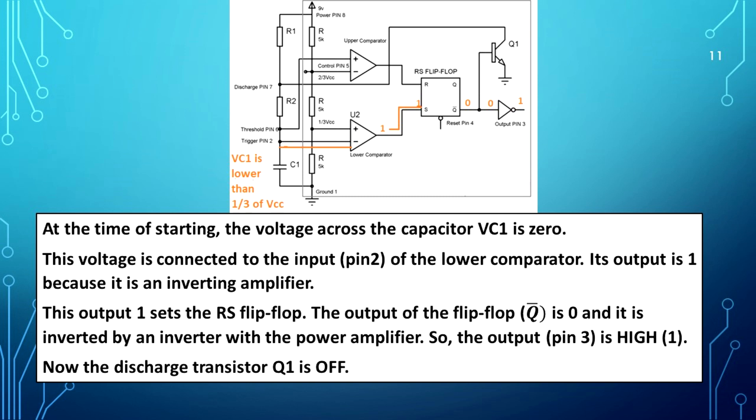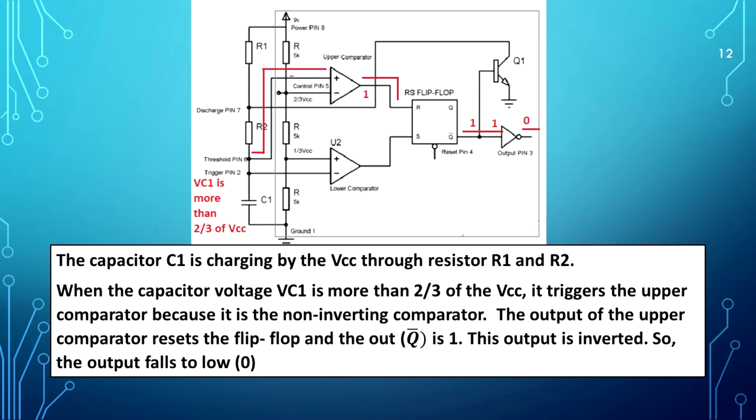The output of the flip flop Q-bar is 0 and it is inverted by an inverter with a power amplifier, so the output is high. Now the discharge transistor Q1 is off. The capacitor C1 is charging through VCC via resistors R1 and R2.